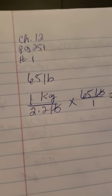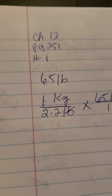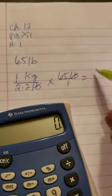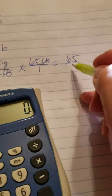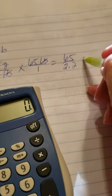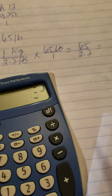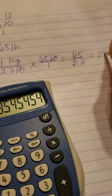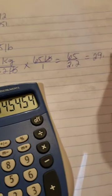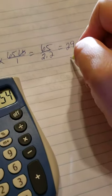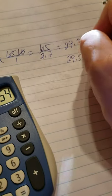When we calculate this, we end up with 65 over 2.2, or 65 divided by 2.2, which gives us 29.5454 repeating, which we could just call 29.5 kilograms.